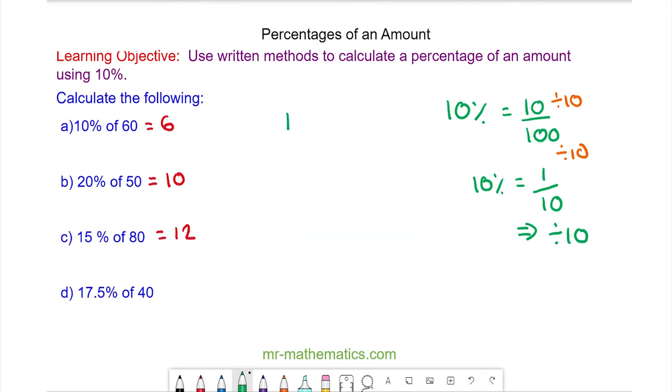For question d we need to work out 17.5%. Again we start with 10%, we find 5%, and then 2.5%, because these three added together will make 17.5%. So 17.5% of 40. We know 10% is 4. So 17.5% is 4 plus 2 plus 1 which is 7.